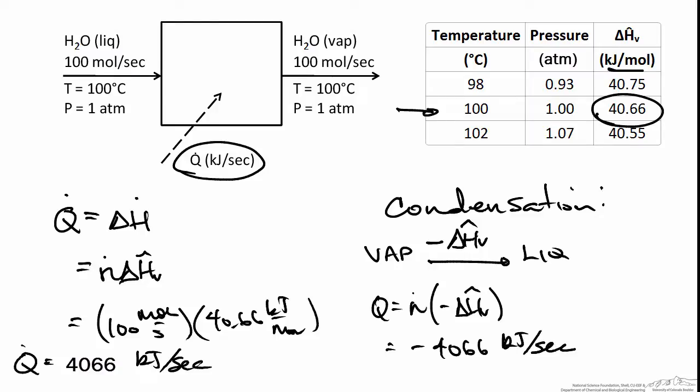The same principle holds for the freezing process: the heat of freezing is equal in magnitude but opposite in sign to the heat of melting at the same temperature and pressure.